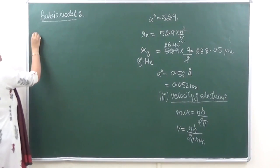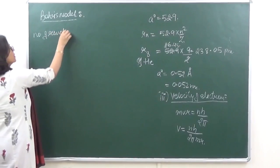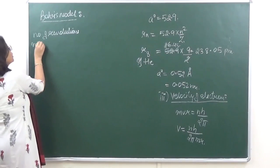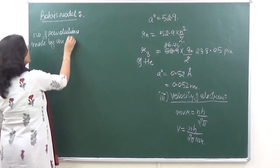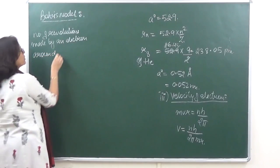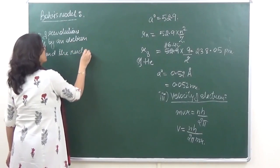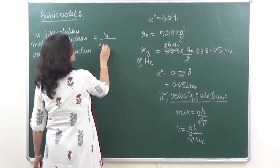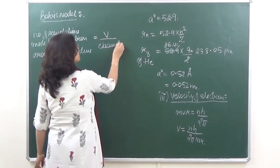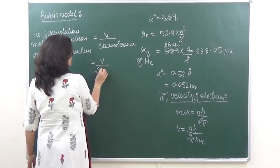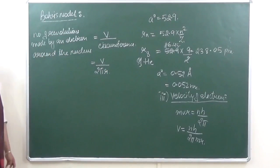Number of revolutions made by an electron around the nucleus - that is given by what? It is given by velocity of the electron upon circumference of the orbit. Circumference of a circle is given by 2 pi r. So number of revolutions is equal to velocity upon 2 pi r.